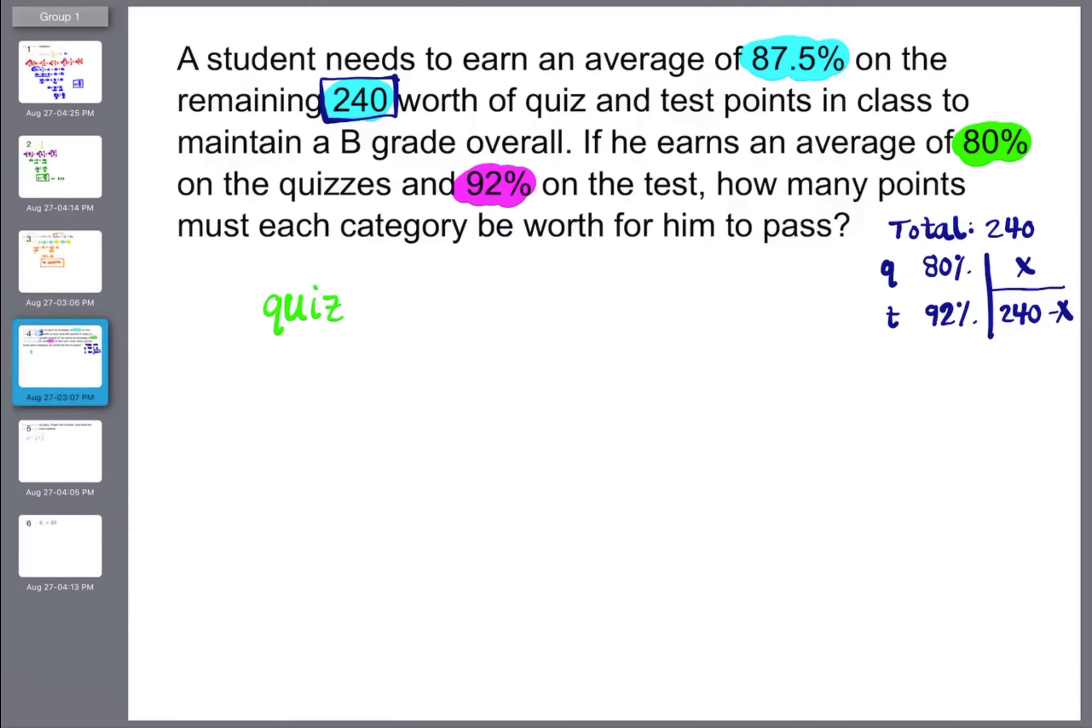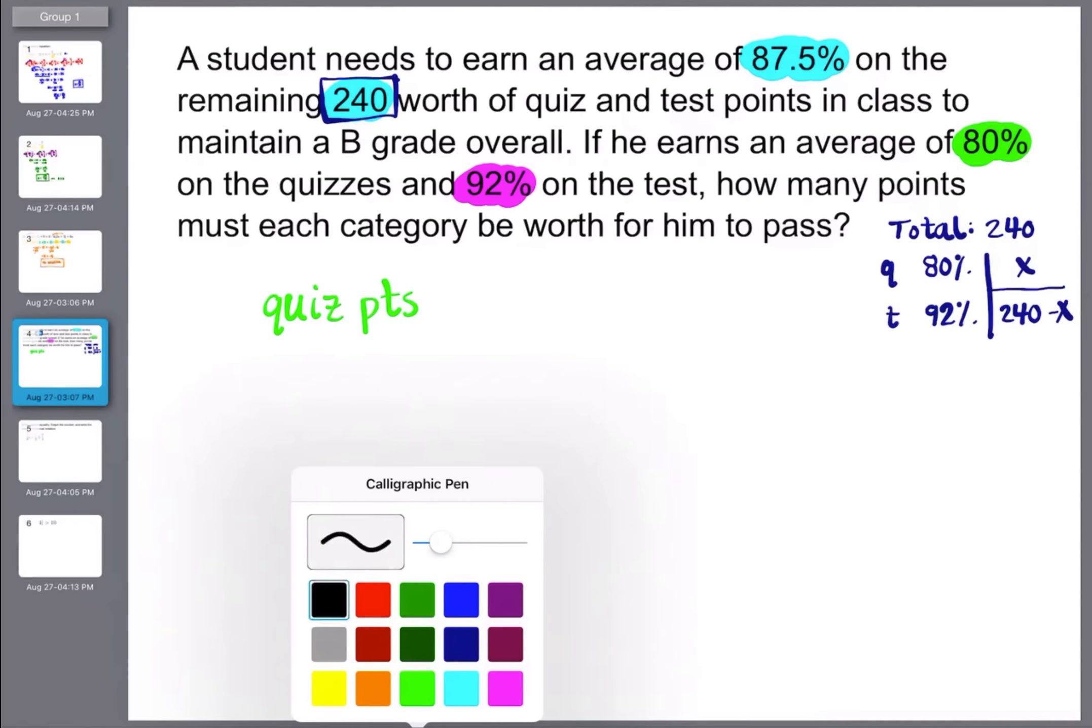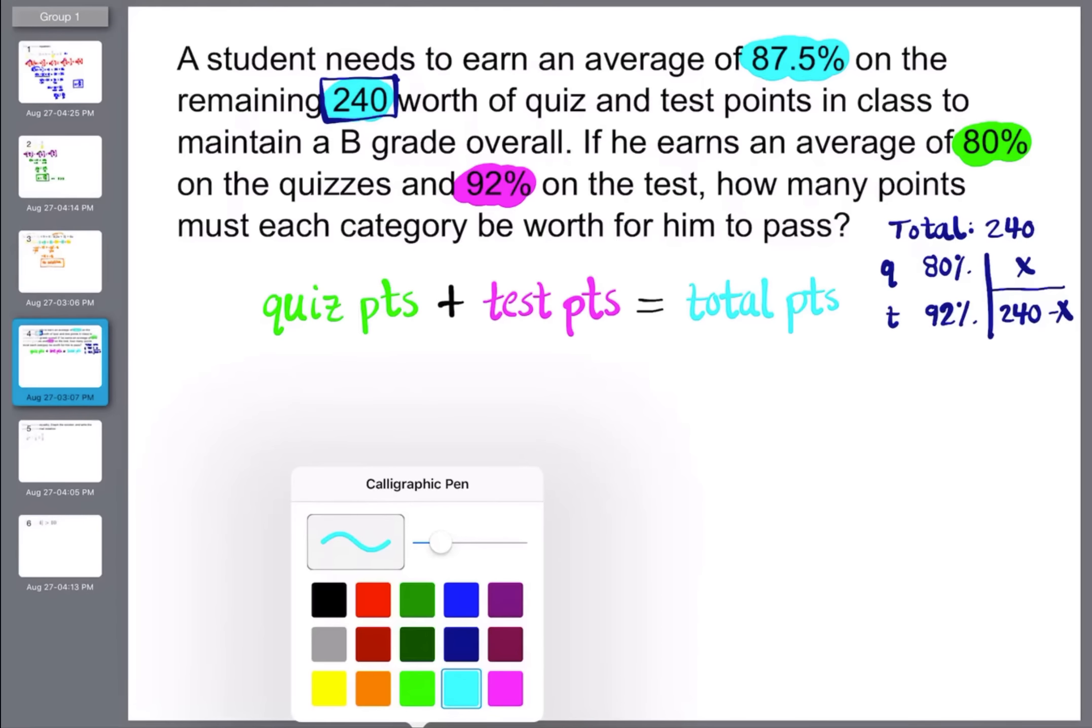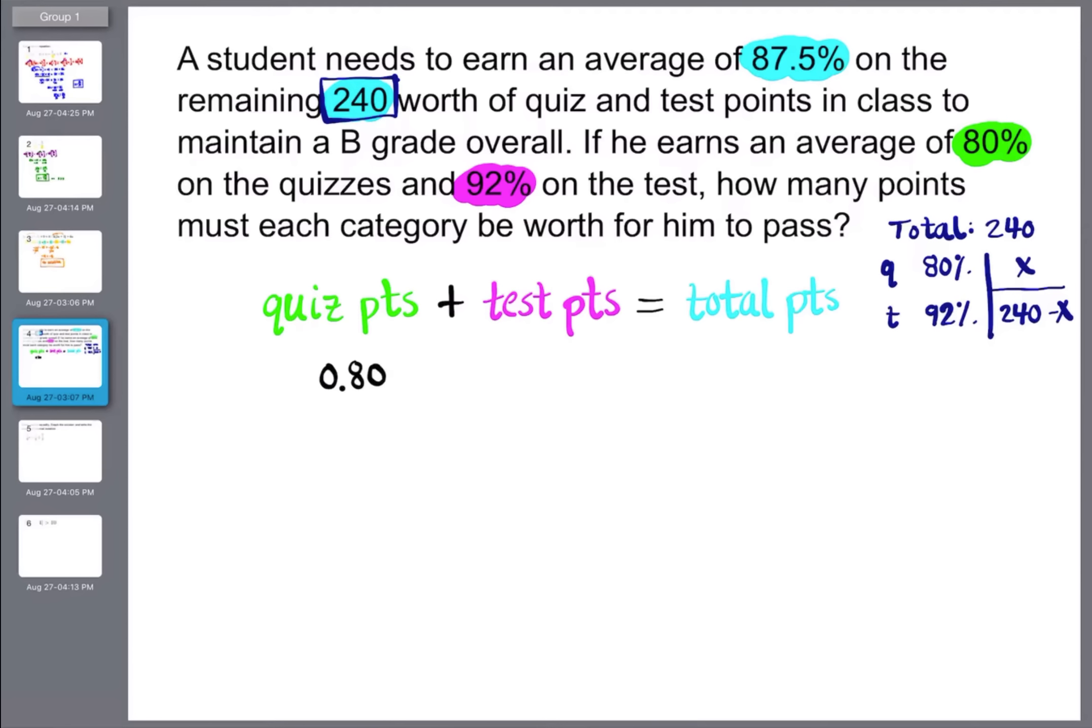So now when I write this out, I'm going to write it like this. We're going to do quiz points plus test points equals total points. And I'm doing that just so you can try to see how things work together. So when I look through this, if I get ready to answer it for the quiz, quizzes are worth 80%, or he earned 80% on the quizzes. And we don't know how many points the quizzes were worth total. So he got 80% on them, but we don't know how many points were directed towards quizzes. And then if we look at tests, he got a 92% on the test, but we have 240 minus x for the number of points that the test were worth.